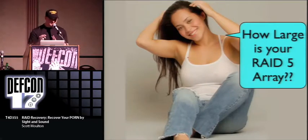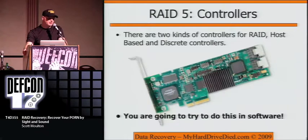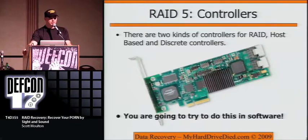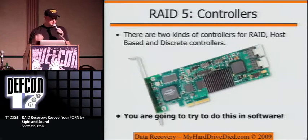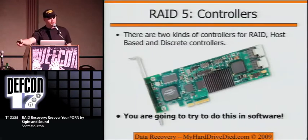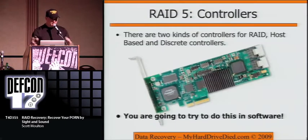So let's talk about RAID 5. The first thing is controllers — it's really helpful if you know what your controller is. There are two different types to pay attention to: host controllers and discrete controllers. If you have a discrete controller, it means there's a processor on my RAID controller to do all the math. If you have a host-based controller, the more drives you add, the more CPU power it uses from your system CPU to do these calculations. A discrete controller does the calculations independently so it's not impacting your system. We're going to try to do all this in software.